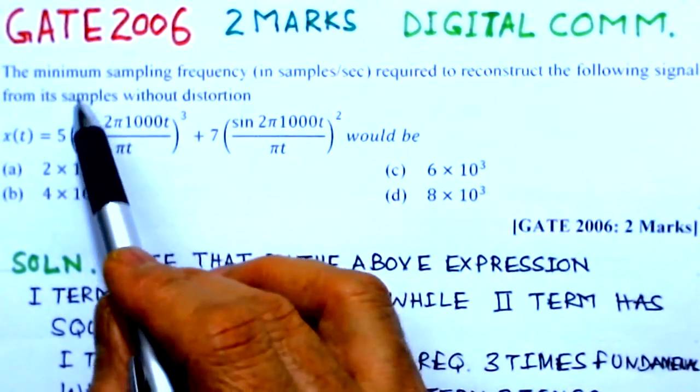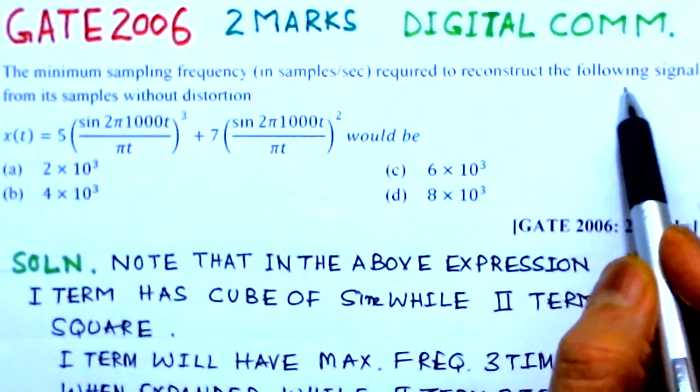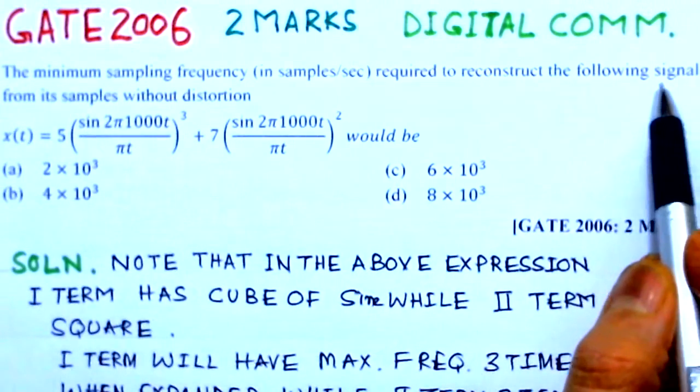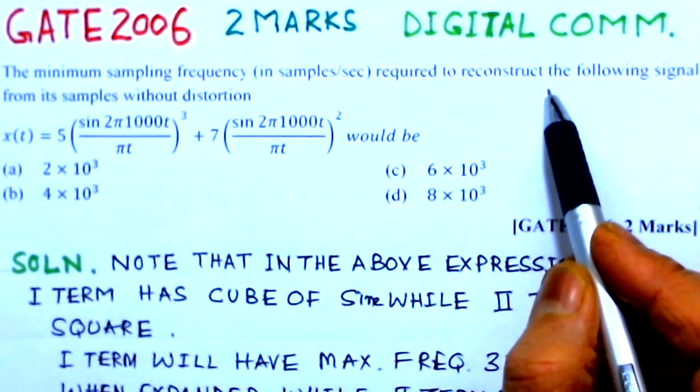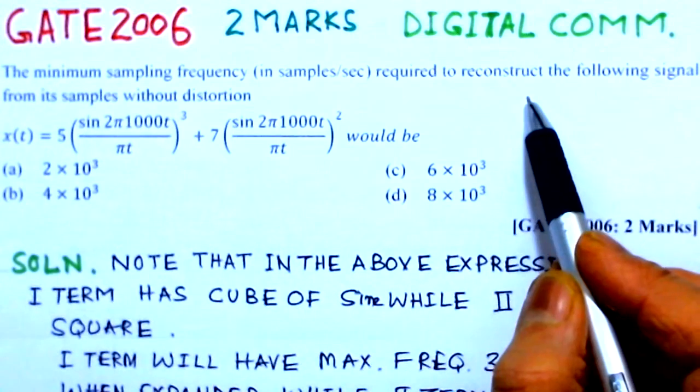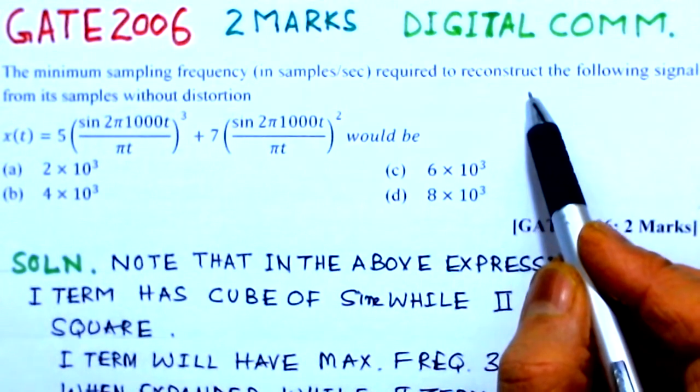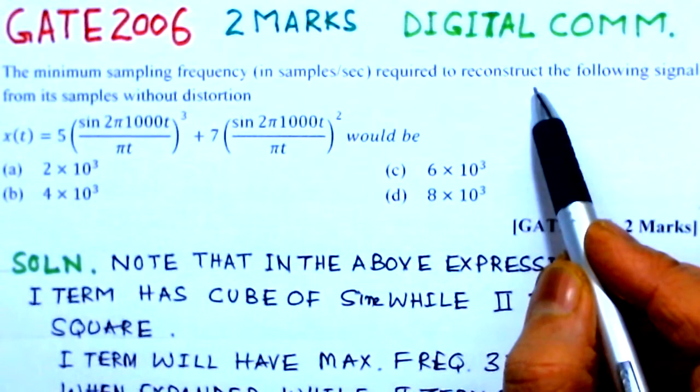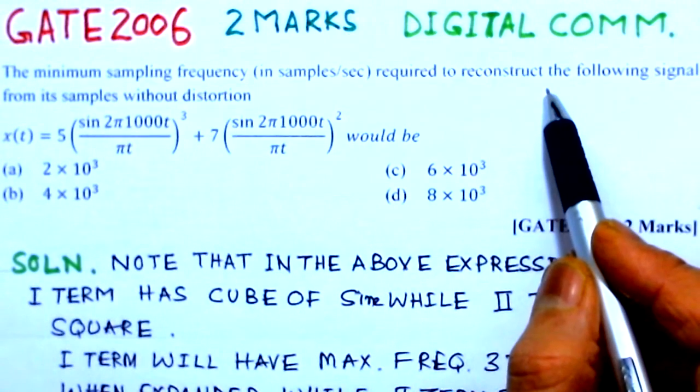From this problem we know the minimum sampling frequency required to reconstruct the signal. The minimum sampling frequency is decided by the Nyquist rate. If fm is the maximum frequency in the signal, then twice fm will give me the Nyquist frequency.